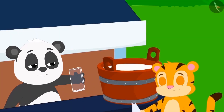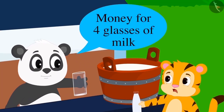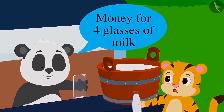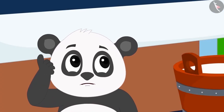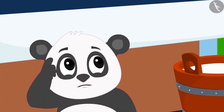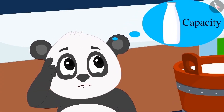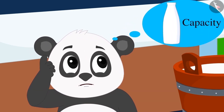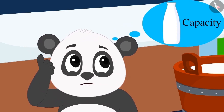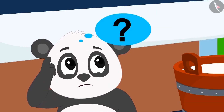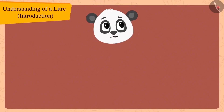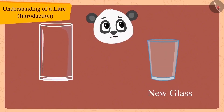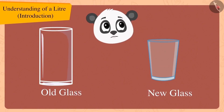When Golu asked for money for four glasses of milk from Shaykh Khan, Shaykh Khan was shocked. Golu also was not sure why this happened. He got thinking that Shaykh Khan's bottle is the same — then how can the capacity of his bottle change? Children, do you know why this happened? This happened because Golu's new glass is smaller than his old one.